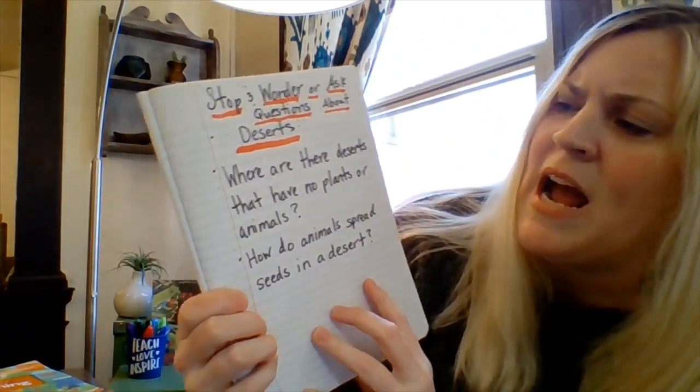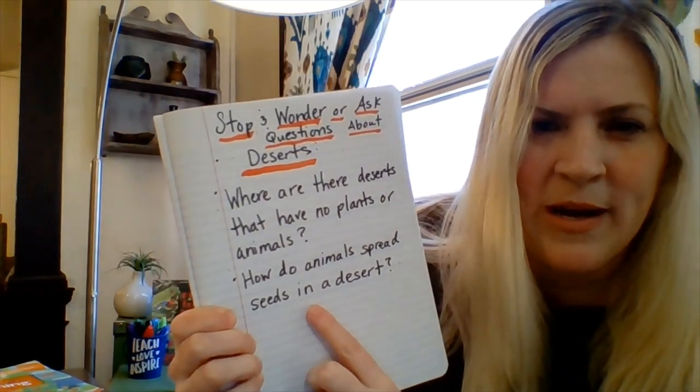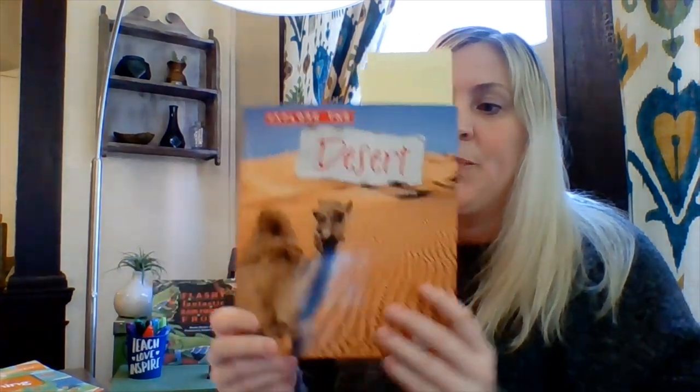Now that you've shared a few more questions, I'm going to share some that my students came up with at this point in the text. They stopped and wondered: where are there deserts that have no plants or animals — where in the world? And how do animals spread their seeds in a desert? Did you have questions that were similar or different? Now I'd like you to do one last thing. Go ahead and share with yourself or someone at home what was some really surprising or new information about deserts, and other questions you think might be answered as we read more later in the week.